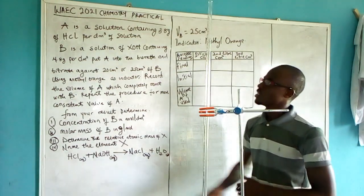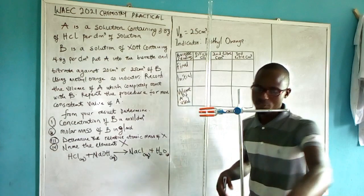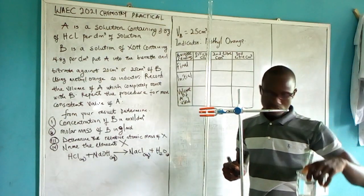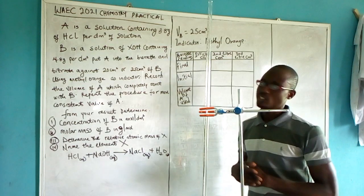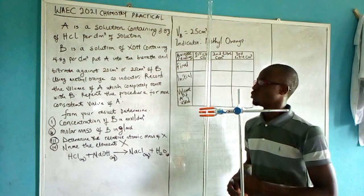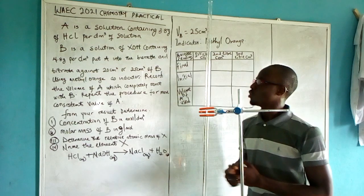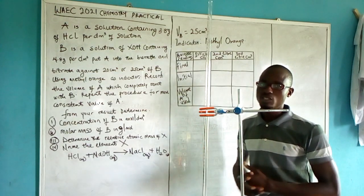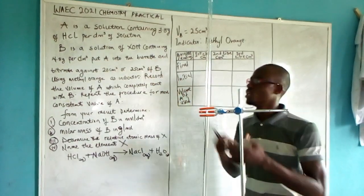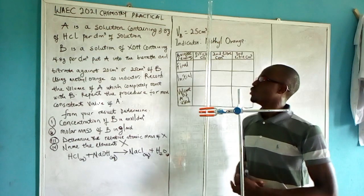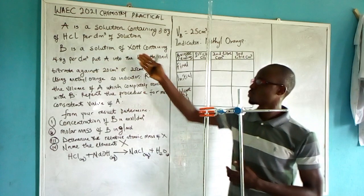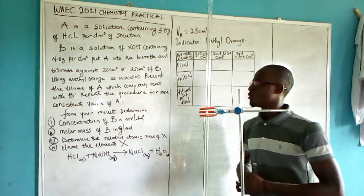We are going to start with the question. Solution A contains 3.8 grams of HCl per dm³. Solution B is a solution of XOH — we don't know which base it is, possibly NaOH or KOH — containing 4.8 grams per dm³.